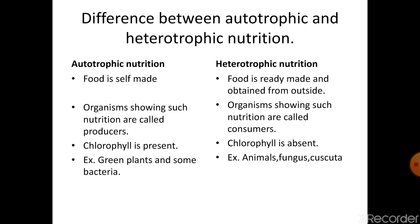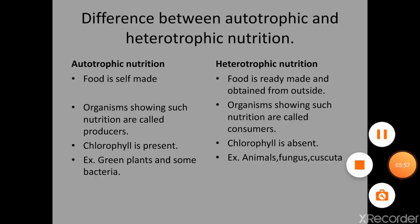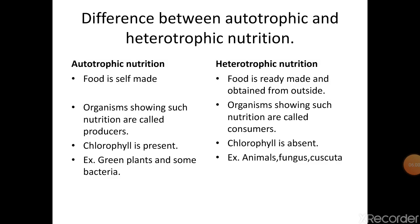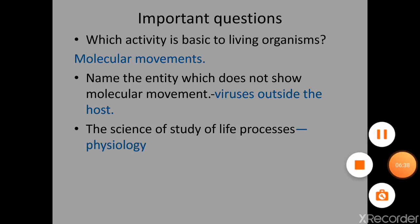The difference between autotrophic and heterotrophic nutrition: 'auto' means self and 'troph' means nutrition, so food is self-made; 'hetero' means different, so food is ready-made and obtained from outside. Autotrophic organisms are called producers and heterotrophs are called consumers. Chlorophyll is required in autotrophic nutrition because photosynthesis takes place; heterotrophs have no chlorophyll, hence no photosynthesis, so they depend on others for food.